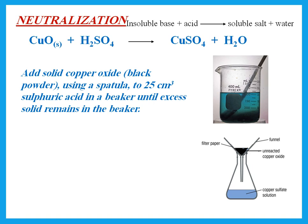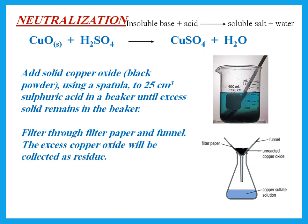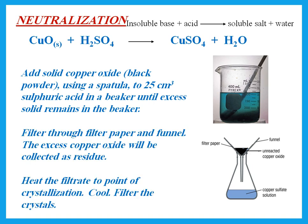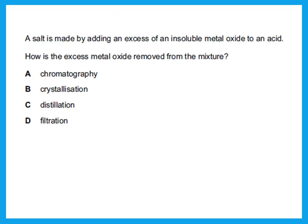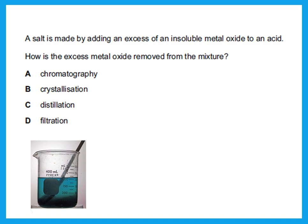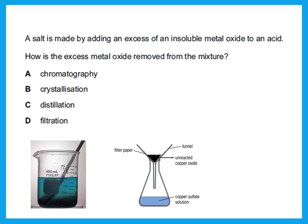We remove the unreacted copper oxide by filtration. The residue is the excess copper oxide we don't want; the filtrate is the copper sulfate solution. We heat the filtrate to the point of crystallization, cool, and filter the crystals. For pure dry crystals, wash with a few drops of distilled water and dry between filter papers. The answer to how excess metal oxide is removed from the mixture is filtration.